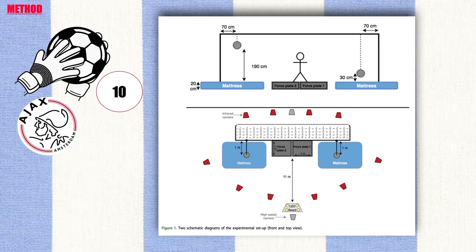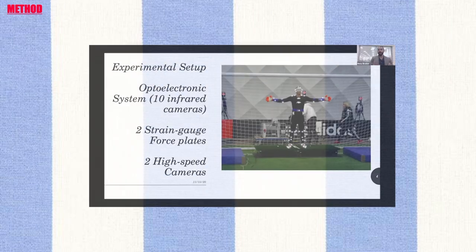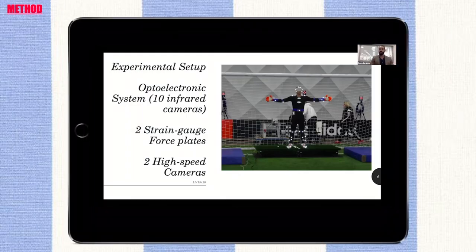A passive marker motion analysis system was used after calibration with an active wand comprising five markers. Trajectory data from 44 markers was captured using 10 infrared cameras at 200 samples per second.